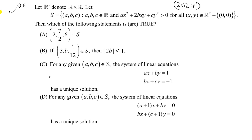Toh yahan jo expression aapko de rakha hai wo hai ax² + 2bxy + cy² > 0. Yeh two variable ki quadratic expression hai. Toh jo parabola banega wo upward parabola banega aur x-axis ke upar hi hoga kyunki greater than 0 hai.